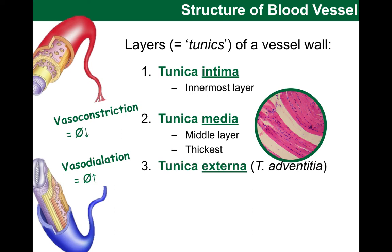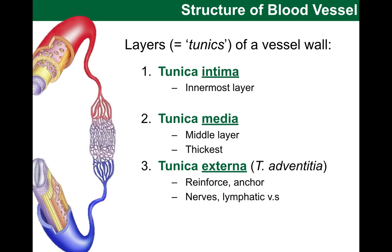Tunica media is also the thickest of these layers. Then let's move our focus onto tunica externa, also sometimes known as tunica adventitia. This layer is made largely of connective tissue, and its function is to support by reinforcing the walls and anchoring the vessel to surrounding tissue. We find that a lot of nerves and even lymphatic vessels run in this layer.